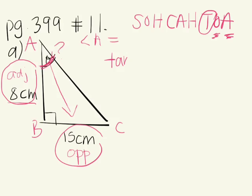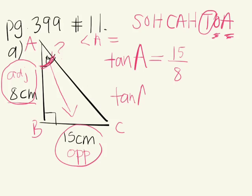We're going to use the tan ratio. So tan A — we don't know the angle — is equal to the tangent ratio. Opposite is 15 over adjacent 8. Can we simplify 15 divided by 8? Do that on your calculator. What's 15 divided by 8? We can round it off to four decimal places. It's actually 1.875.